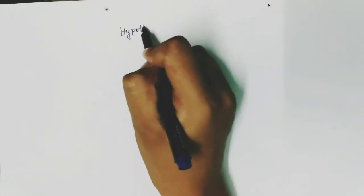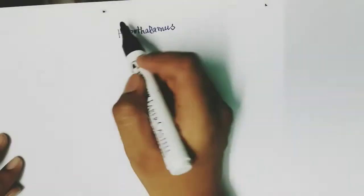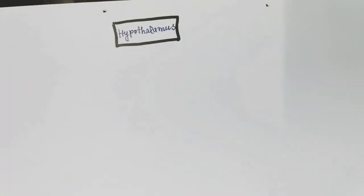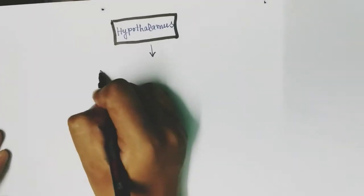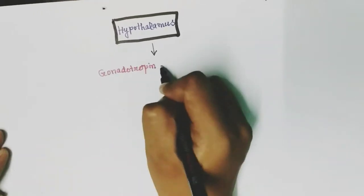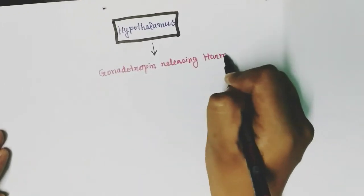Hormonal regulation of spermatogenesis starts with the hypothalamus in the brain. The hypothalamus releases a hormone called gonadotropin-releasing hormone, that is GnRH.